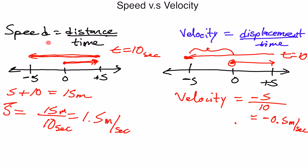Let's recap: speed is a scalar value and is always positive because distance cannot be negative. Velocity can be positive or negative because displacement can be positive or negative — it gives a direction, sometimes expressed as east, west, north, or south. Velocity is a vector, meaning it has both a magnitude and a direction, while speed only has a magnitude.